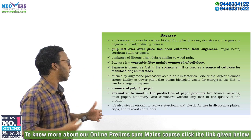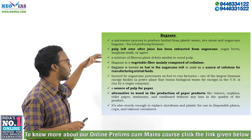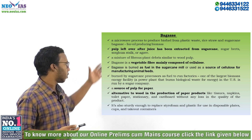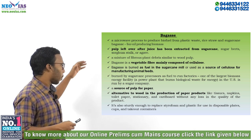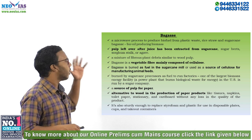Another main usage of bagasse is as a pulp for paper production. We know that for paper production we use the pulp of wood and trees. Bagasse can also serve as a source of pulp for paper. The fiber in bagasse can be used as an alternative to wood in the production of paper products like tissues, napkins, toilet papers, stationery, and cardboard, without any loss in the quality of the product.